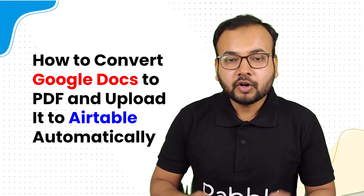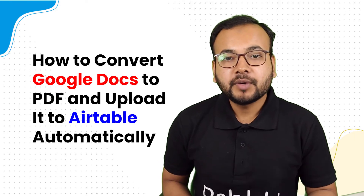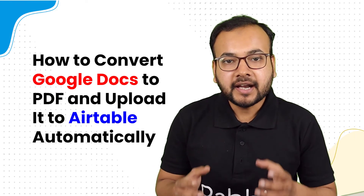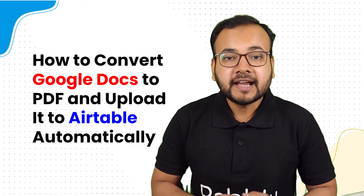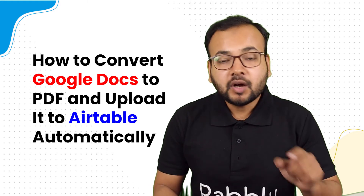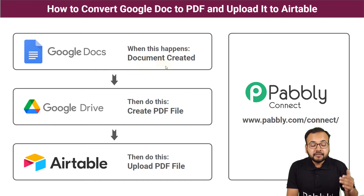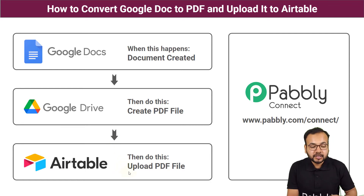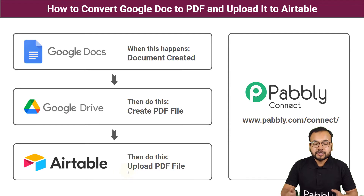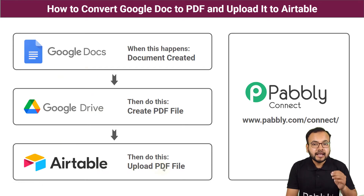Most of the time we need to convert documents into PDFs, but manually converting and then sharing them is a very hectic and time-consuming process. So we have designed an automation for this purpose. The flow is: you create a document in Google Docs, and as soon as the document is created it will be converted into a PDF file, saved in your Drive, and the same PDF file will be saved in your Airtable database automatically. You can save both documents in two different locations and easily access features of Google Docs and Airtable, saving your time and manual efforts.